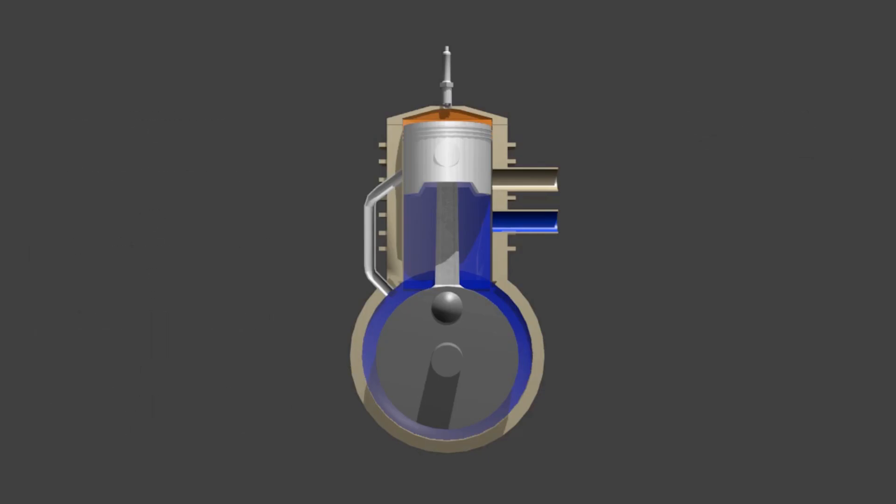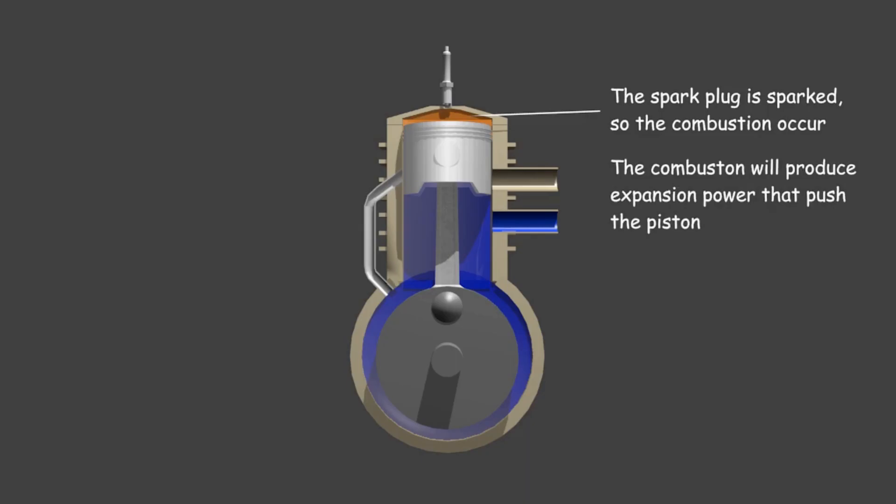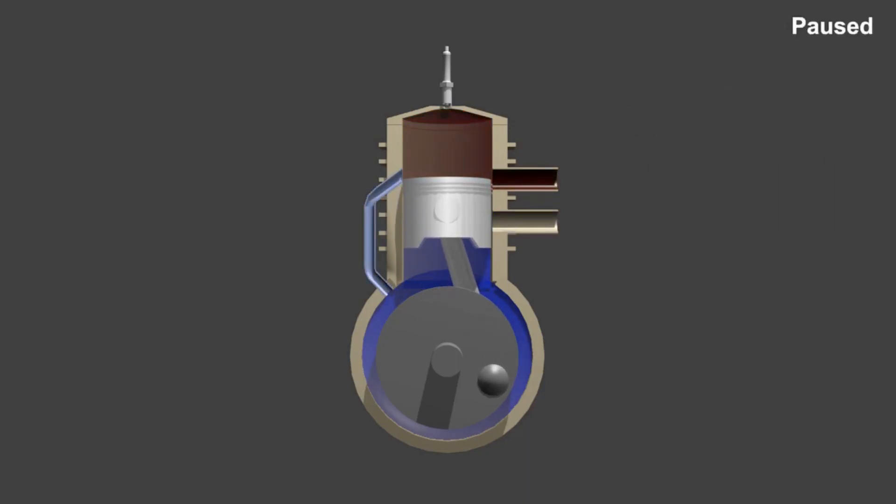After that, continue to step two where the piston moves down. At this time, the spark plug is sparked, so that the compressed air-fuel mixture in the combustion chamber burns and produces an expansion power that pushes the piston down. This combustion is what we need to keep the engine running.